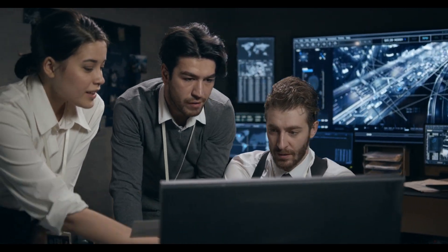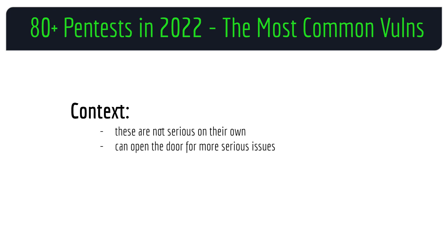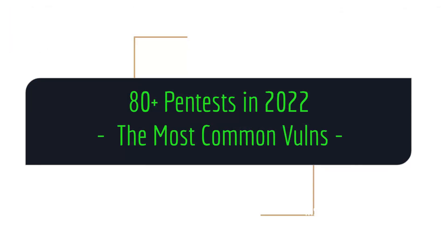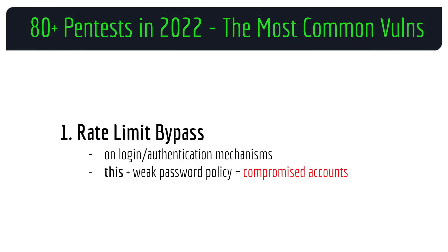Despite the fact that these issues are not critical on their own account, they can more often than not open the door and contribute to more serious vulnerabilities. Starting with rate limit bypass: most of the applications I tested have some sort of login functionality or authentication mechanism that involves providing credentials to access certain features. One of the tests I perform is to see whether or not rate limits have been imposed when abusing these mechanisms.